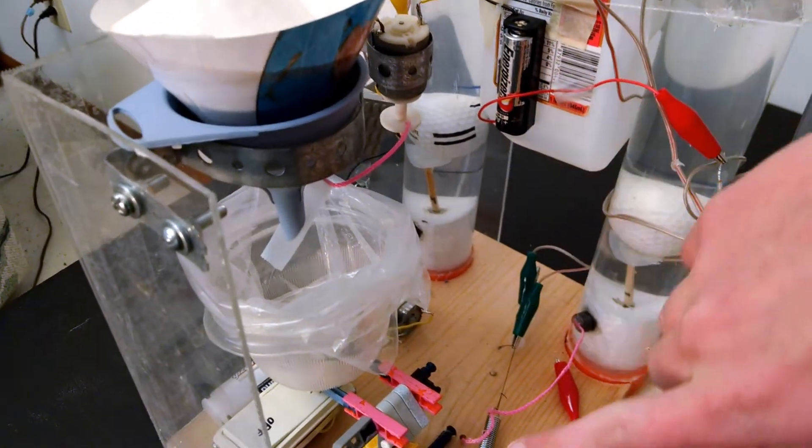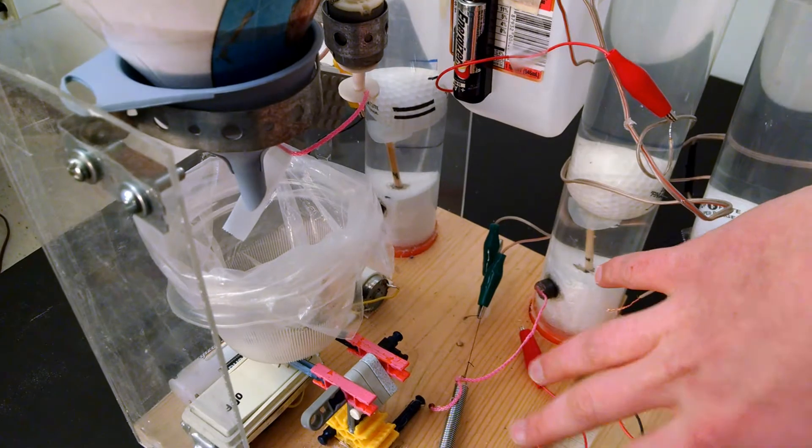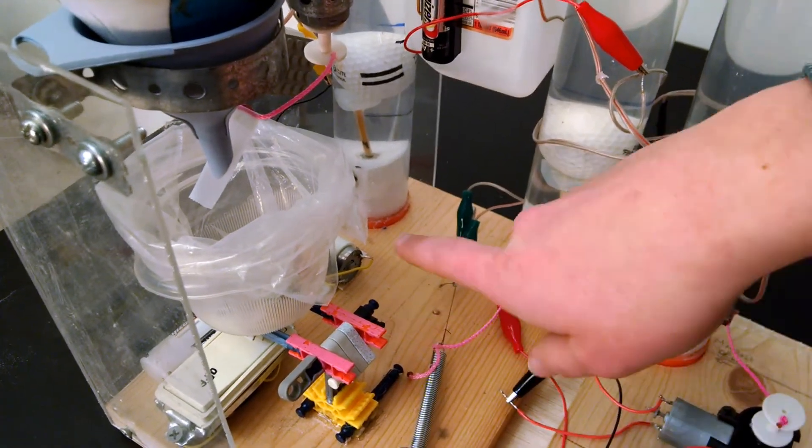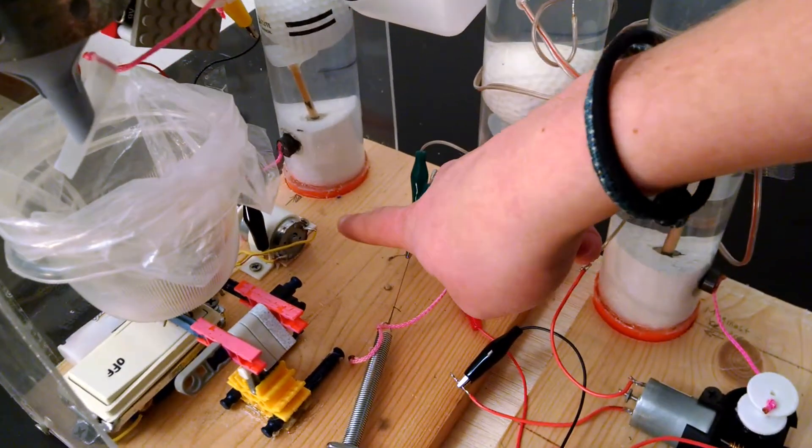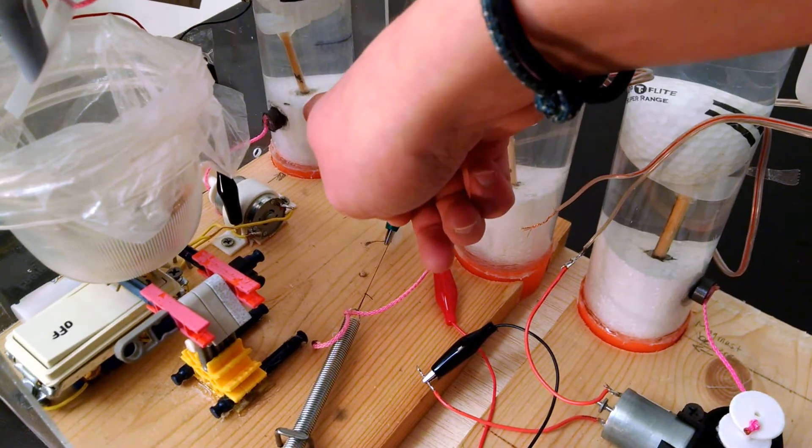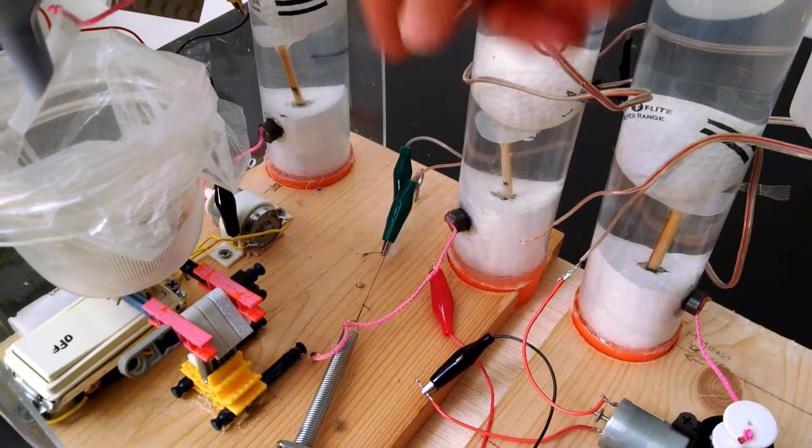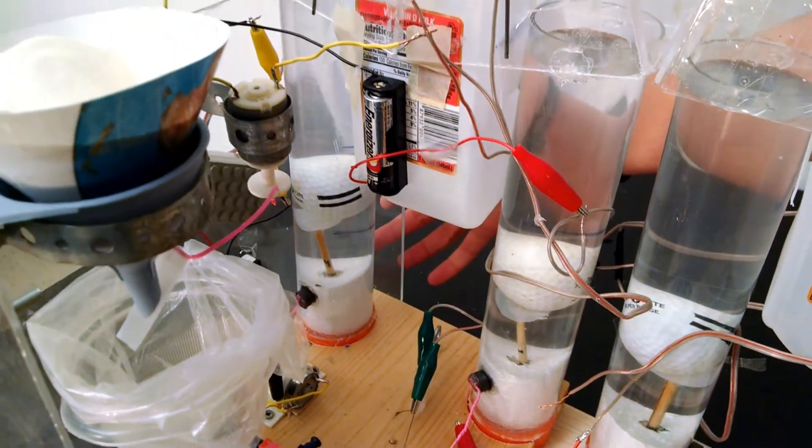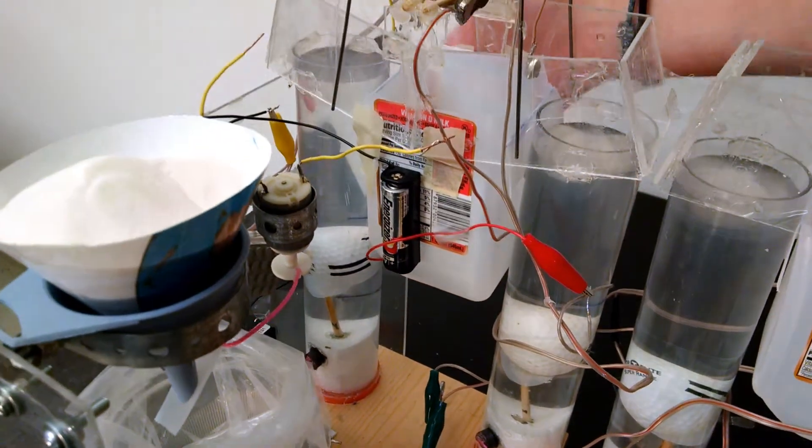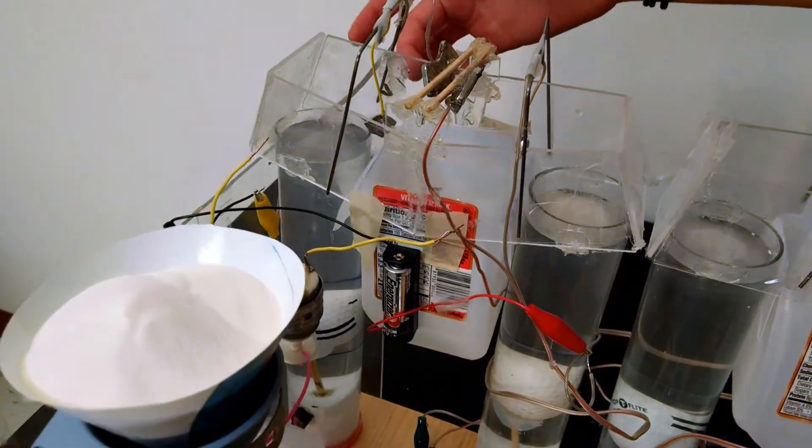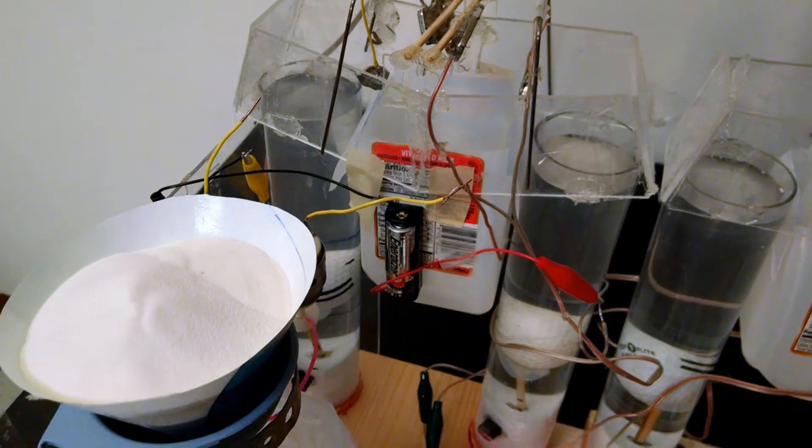The sand will fall through and as enough sand gets in it will flip this switch turning on this motor which will yank away that magnet letting the float rise up with the golf ball triggering another magnetic switch turning on the buzzer.